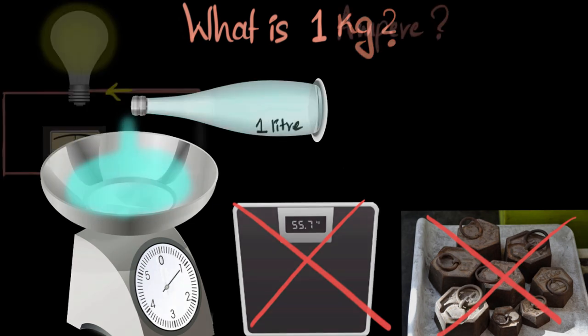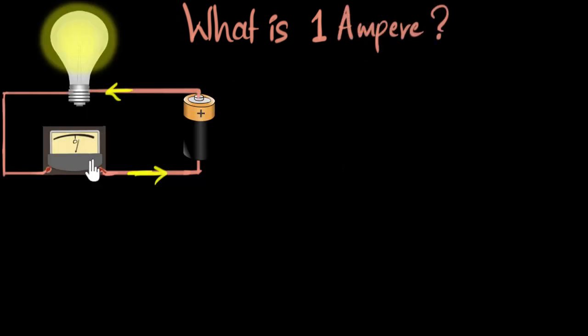Now we can go back to our original question. Our original question was, how do we invent a scale to measure current? And so for that, we need to define now what one ampere is.